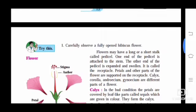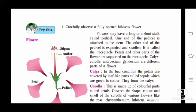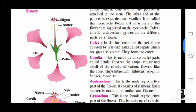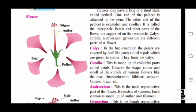Now, the next point is flower - a well-known and very attractive part of the plant. Flowers may have long or short stalks called pedicels. You can see in the figure, the pedicel is shown. One end of the pedicel is attached to the stem and the other end is expanded and swollen, called the receptacle. Petals and other parts of flowers are supported on the receptacle. Calyx, corolla, androecium, and gynoecium are the different parts of the flower.